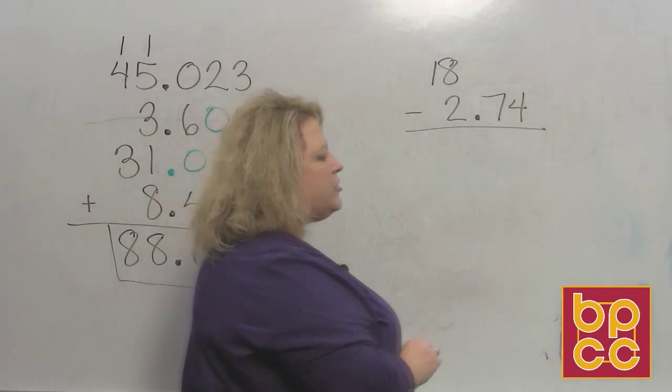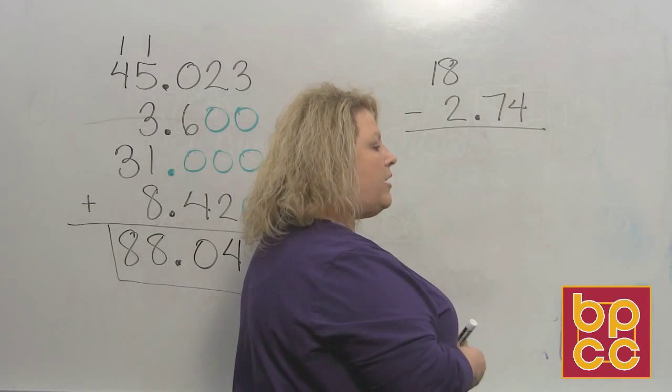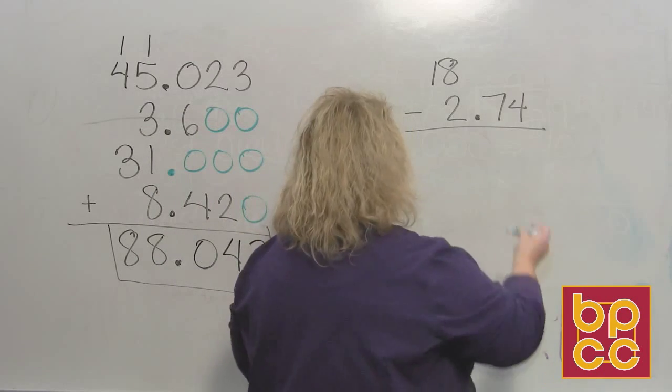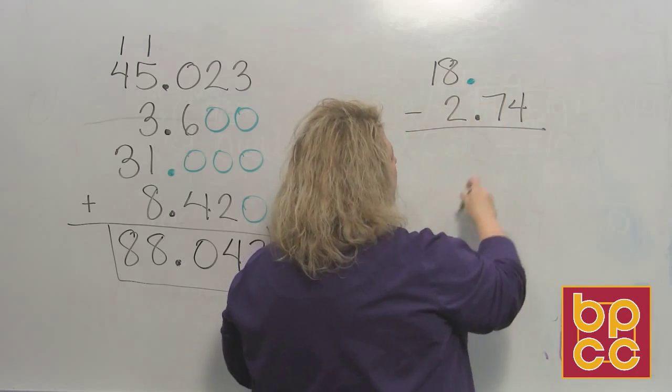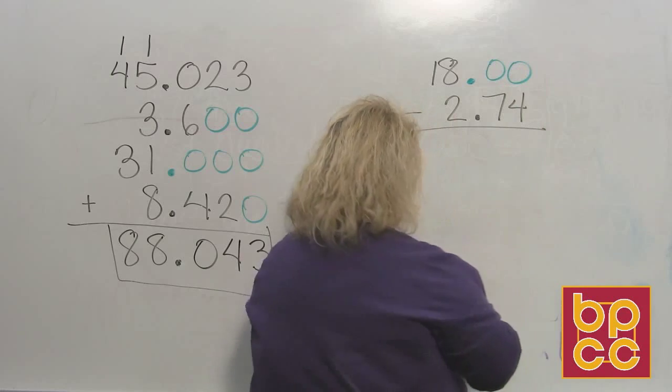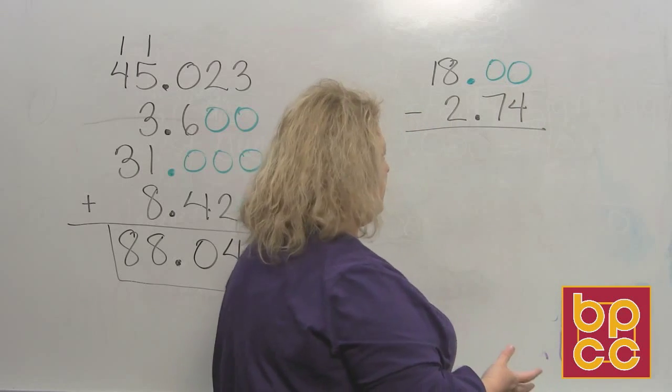Now when it comes to subtraction, it's kind of like the same thing. You still have to make sure that you line your decimals up correctly. And I'm subtracting the whole number eighteen. And remember, eighteen has a decimal at the end of it. Put your zeros for placeholders. That's important.